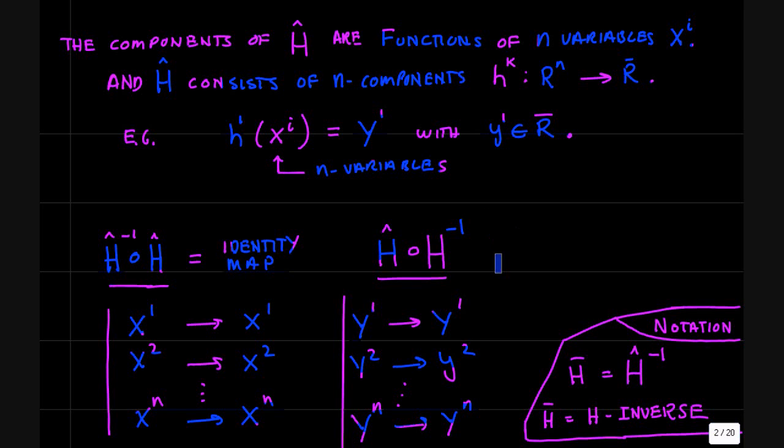Now this minus 1 notation is going to get in the way because we're using the superscript and subscript notation for the components of the points in R^n. And so we're going to switch over to a notation where instead of h to the minus 1, we're going to call the inverse of h, h bar. So h bar can be read as h inverse. We're going to make our equations look a little cleaner.